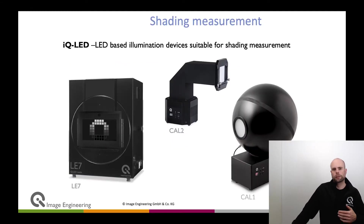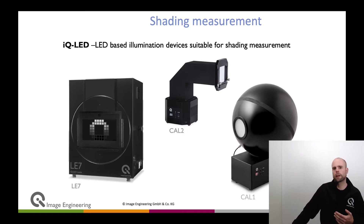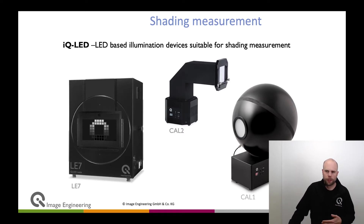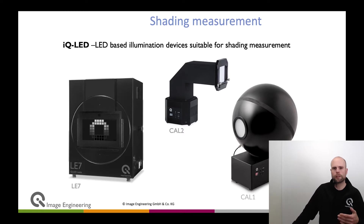There are different Image Engineering devices that can be used for that. For example, the LE7, which is a half-meter integrating sphere, is designed to back-illuminate transparent test targets — we use it for dynamic range or noise measurement. But you can also put a diffuser in the chart plane so that you just have a large diffuser and back-illuminate it, giving you high uniformity over the entire area due to the large sphere. That device is used on many production lines.